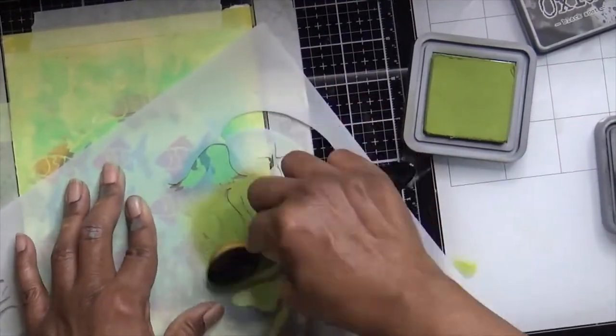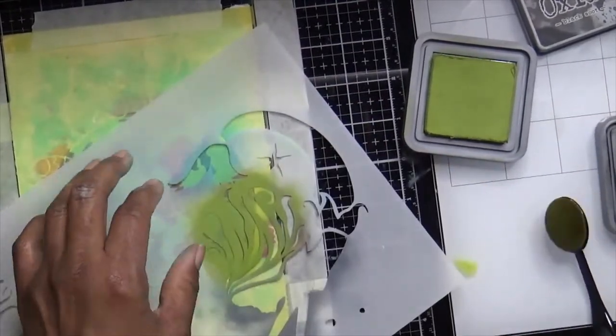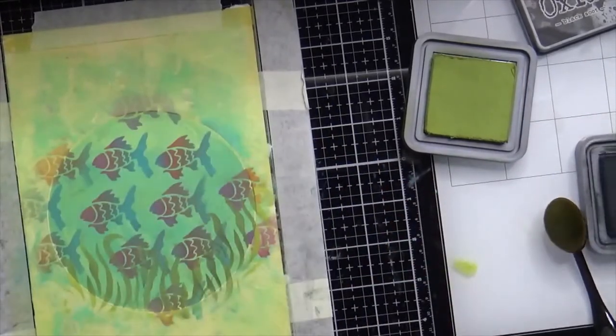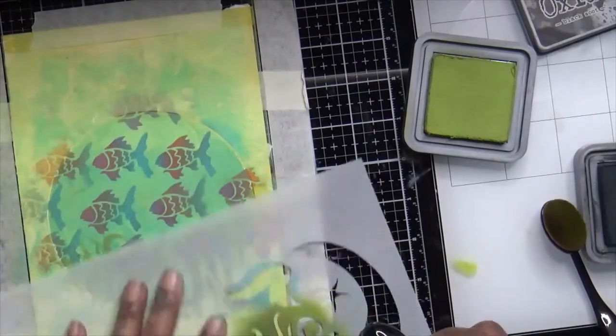I'm using peeled paint for the color of the seaweed. And then I'm also going to use a little bit of black soot just to darken it up here and there.